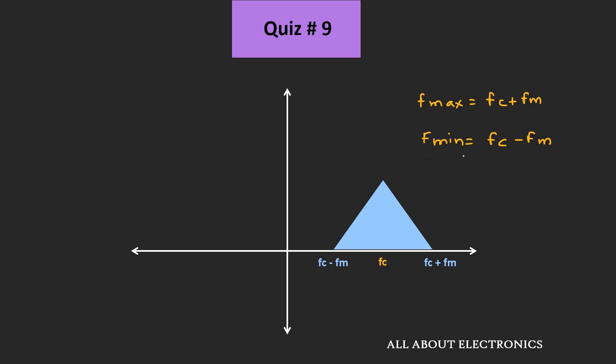We have been given that this minimum frequency is 555 kHz. That means fmin, which is fc minus fm, equals 555 kHz. We found that the value of fm is 5 kHz.